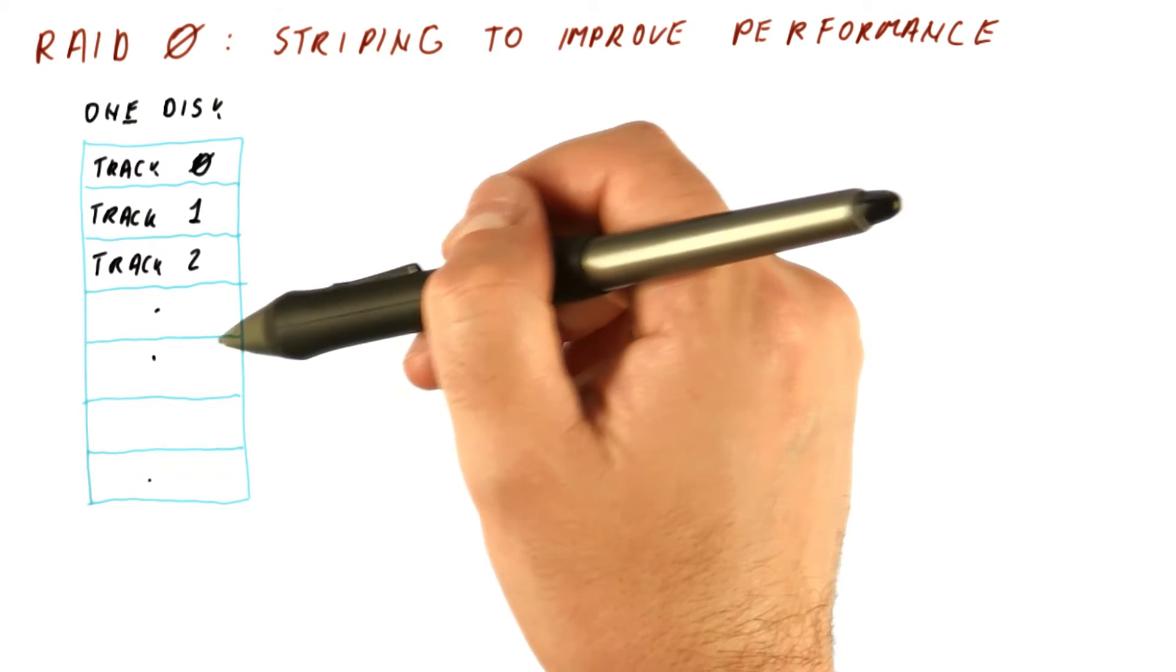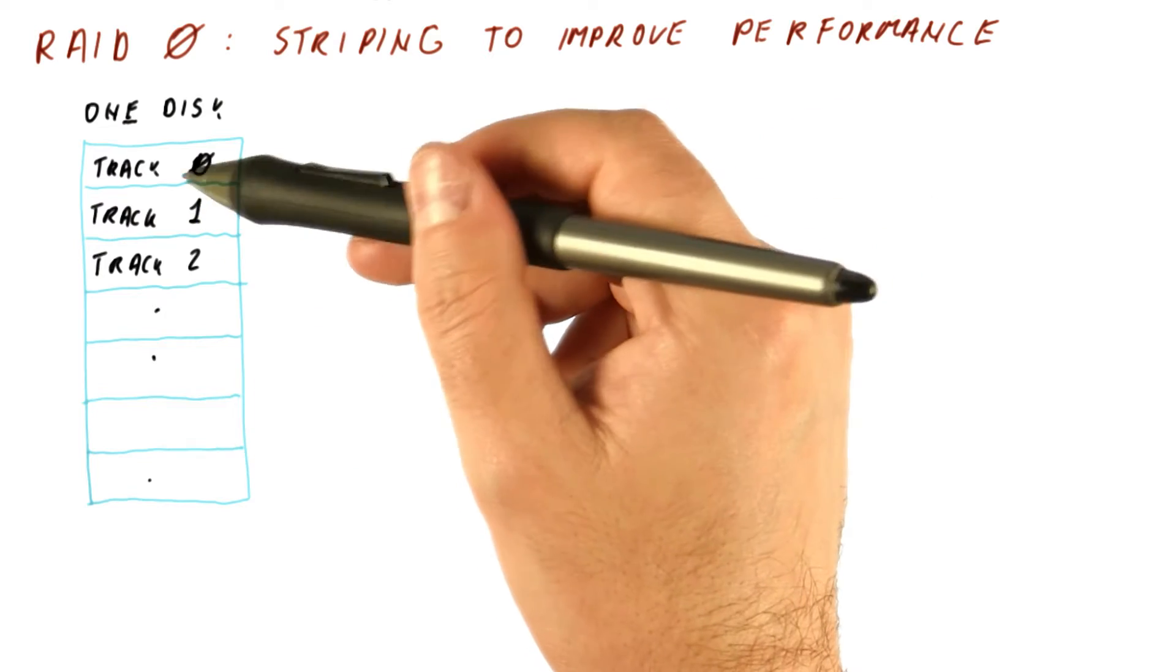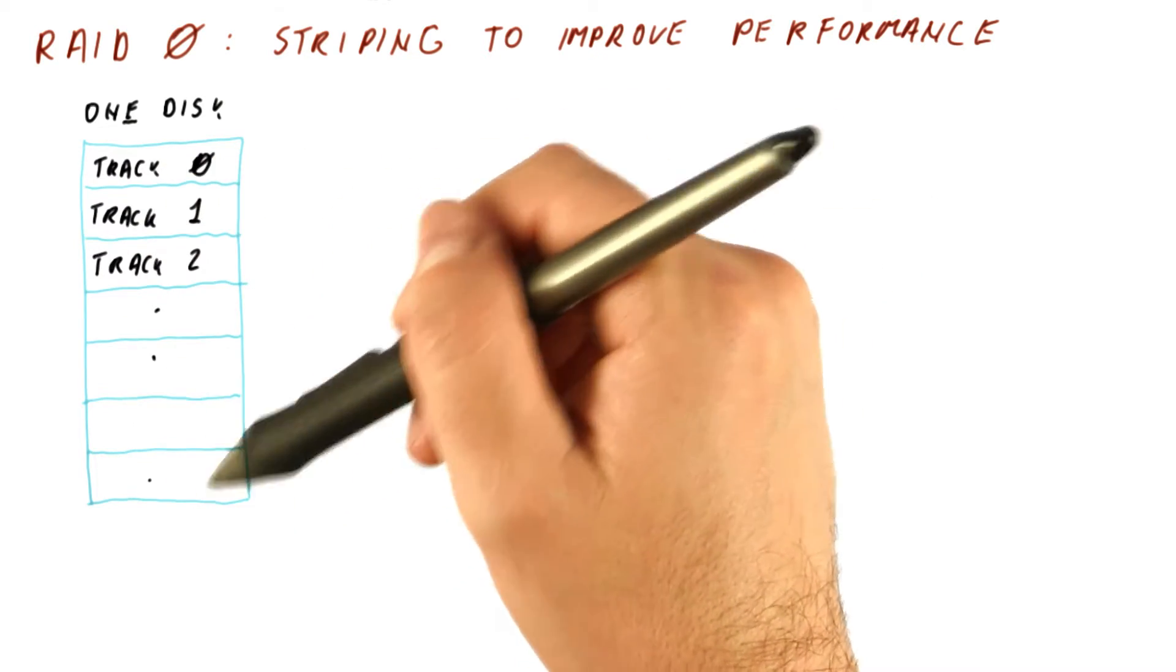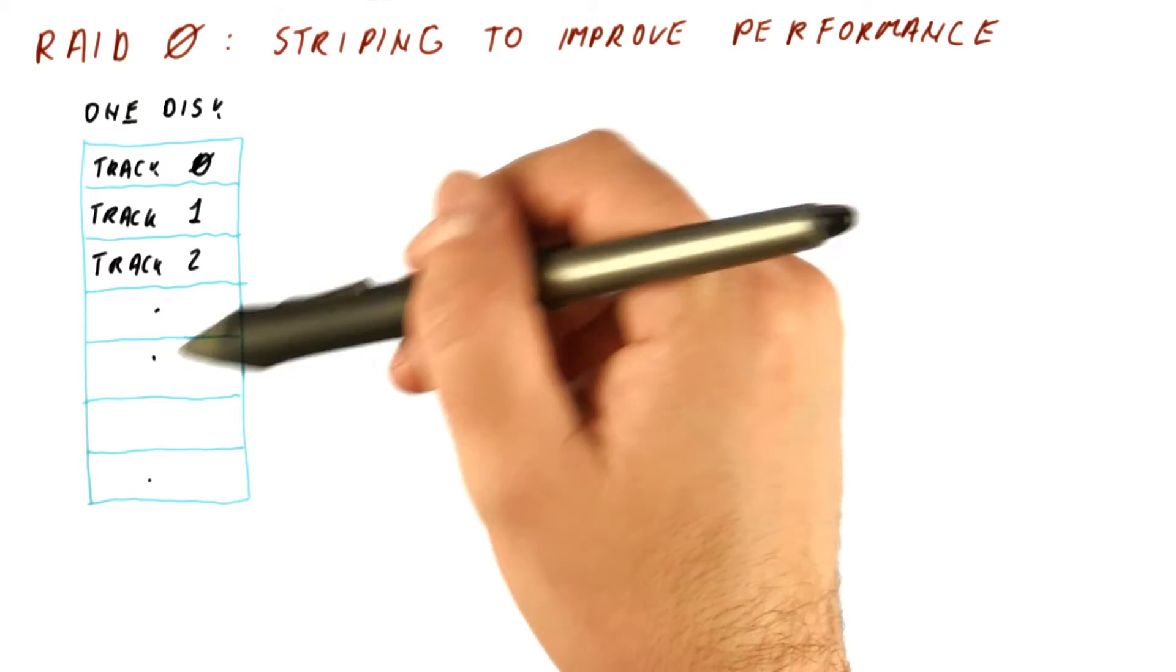But for each of these accesses, we move the head, we read the track, we move on to something else. So we cannot get more performance than just reading one track at a time at the current rotational speed of the disk.